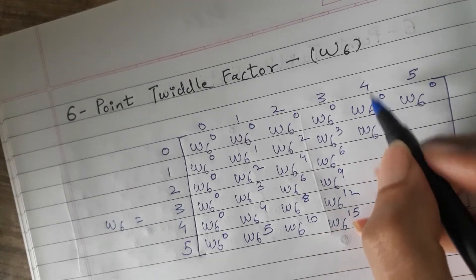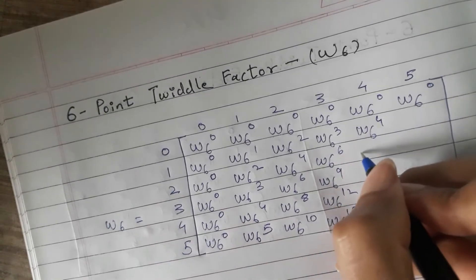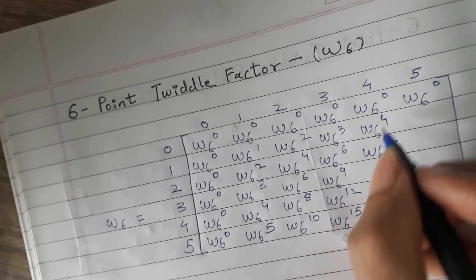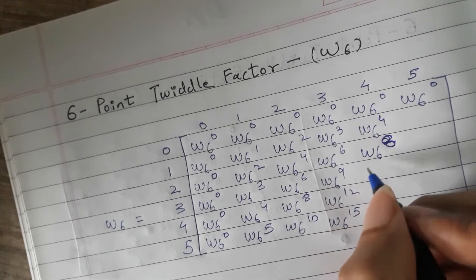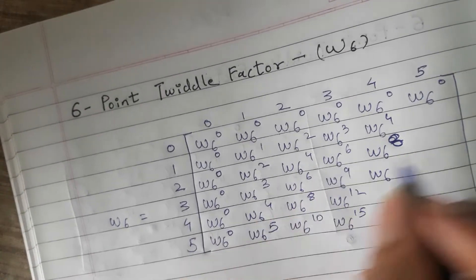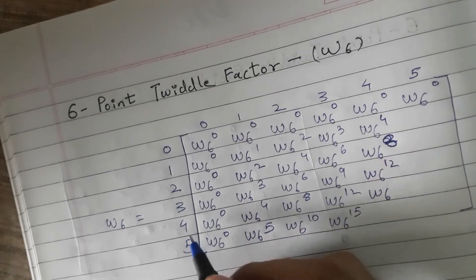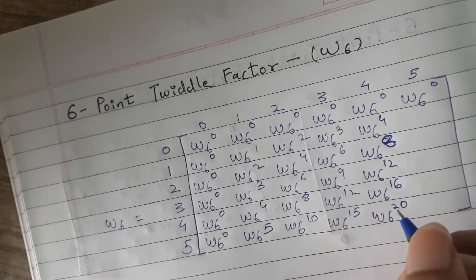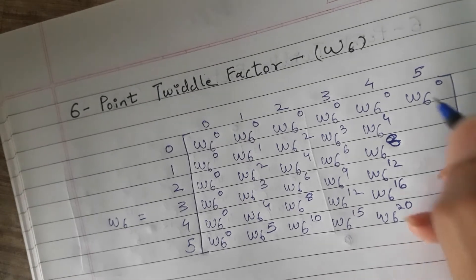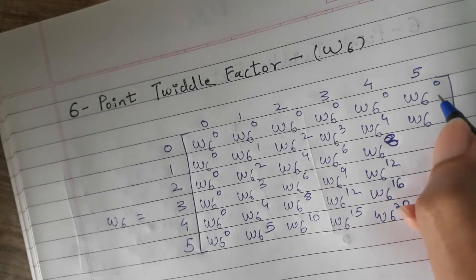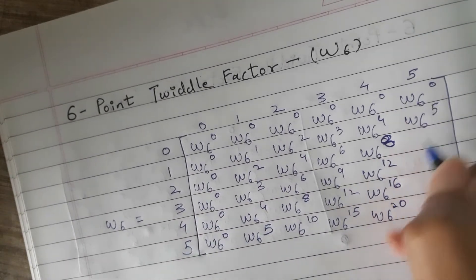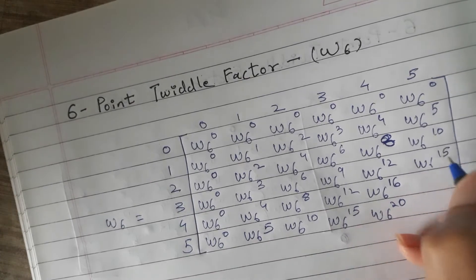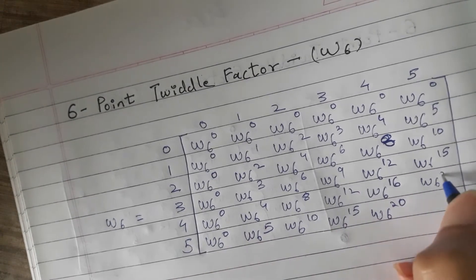Now here W6 exponents are computed by multiplying indices. 4 into 1 is 4, 4 into 2 is 8, 4 into 3 is 12, 4 into 4 is 16, 4 into 5 is 20. Then 5 into 1 is 5, 5 into 2 is 10, 5 into 3 is 15, 5 into 4 is 20, 5 into 5 is 25.